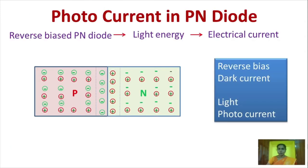First, what is photodiode? Photodiode is the reverse bias semiconductor device that uses light energy to generate electric current. Remember, photodiode is designed to operate in reverse biased condition.